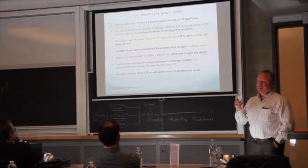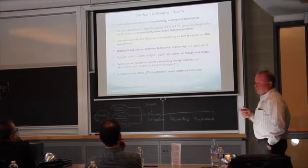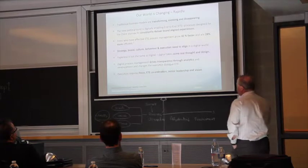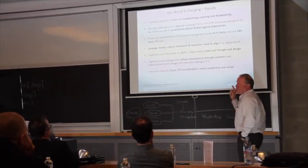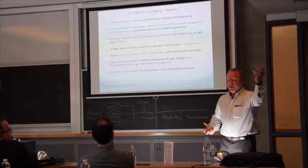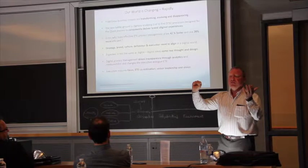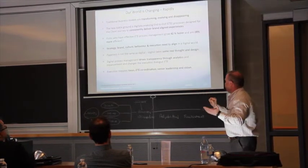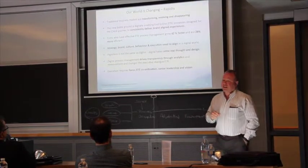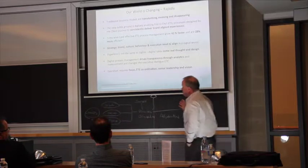Firms that have effective end-to-end process management grow 42% faster and are 18% or 28% more efficient. So there's real money in this. People, if you think about designing strategy, brand, culture, behavior, execution, need to align. I can't have my tech guys thinking some other thing. They're building this, and I want this, and they're building that. That is not the way. We have to get that totally aligned. And that is a transformation agenda that a lot of people aren't clear on. And not very easily done. And it requires end-to-end coordination and senior leadership and vision.